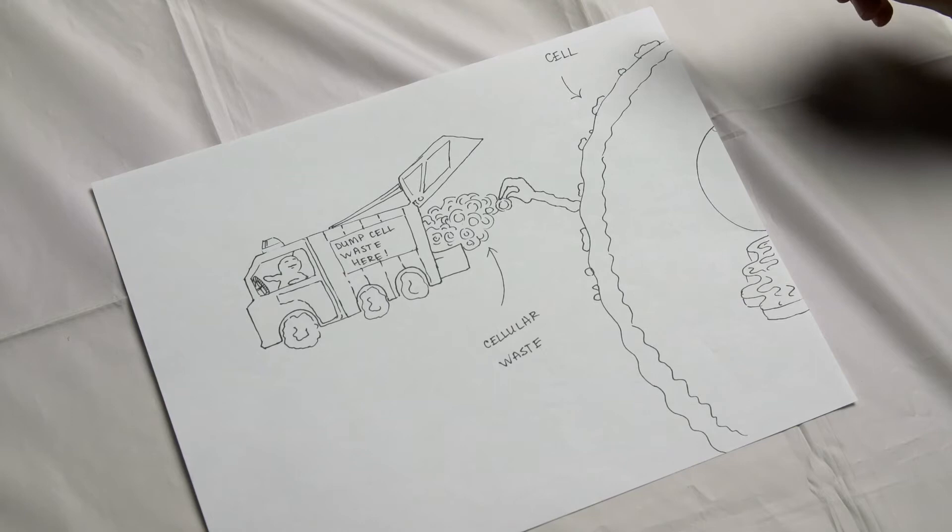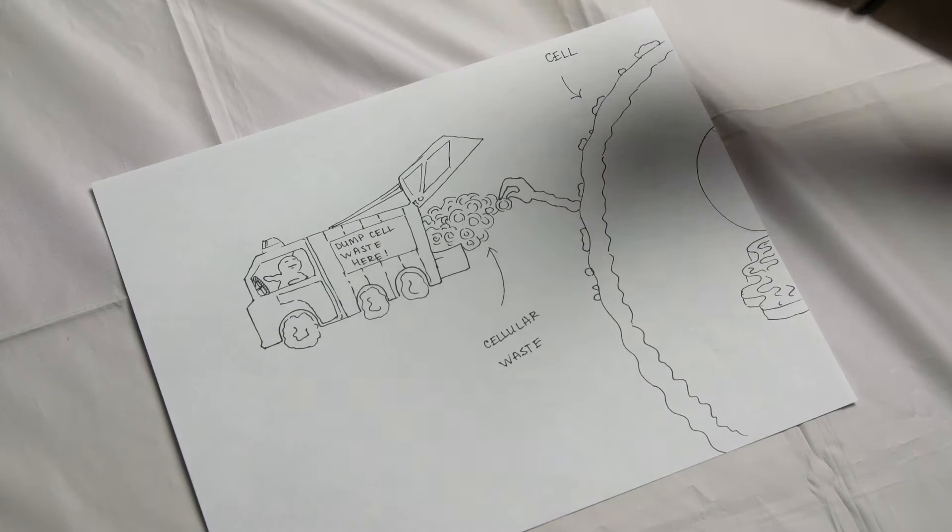In a normal scenario, a cell takes out its garbage, it picks up whatever it needs to, gives it to the garbage man, and garbage man takes it to the waste.